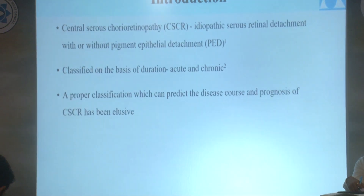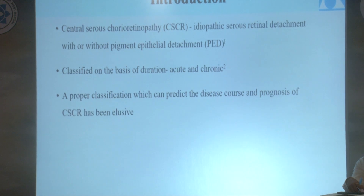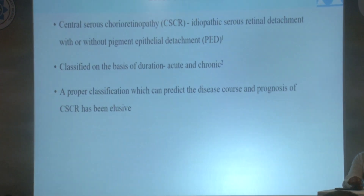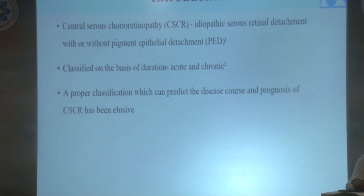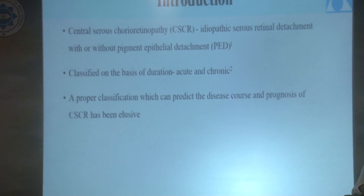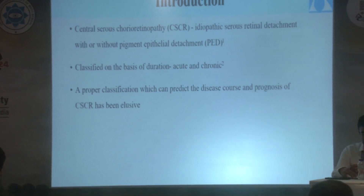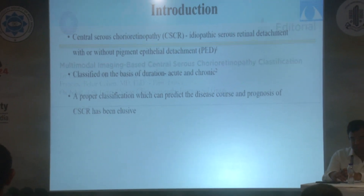Central serous chorioretinopathy is an idiopathic serous retinal detachment which can be classified on the basis of duration as acute or chronic, but a proper classification system to predict its disease course has been elusive.